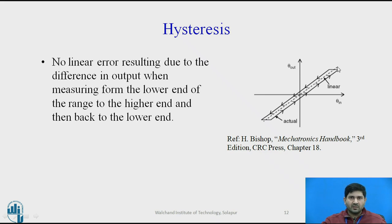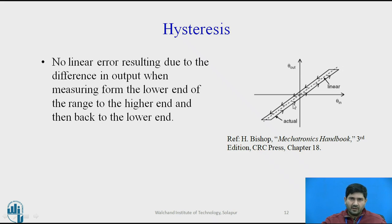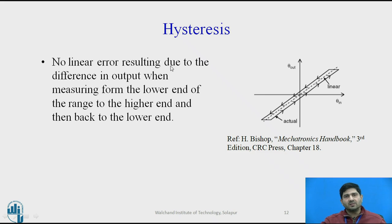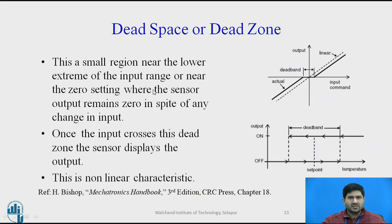Another important characteristic is hysteresis. Measurement is typically bi-directional — as the quantity being measured rises in value and also when it decreases. This measurement is never perfectly constant, so you typically get a band called the hysteresis loop. It is a non-linear error resulting from the difference in output when measuring from the lower end of the range to the higher end and then back to the lower end. Hysteresis is one of the major sources of bias errors in sensors.